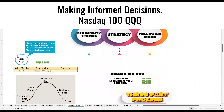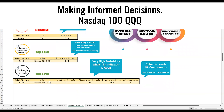Stage analysis is looking at four different phases: accumulation phase, growth phase, distribution phase, and declining phase. Right now, 53% of the NASDAQ companies are on an uptrend. This seems a little bit mediocre, seems a little bit neutral. Why are we excited?